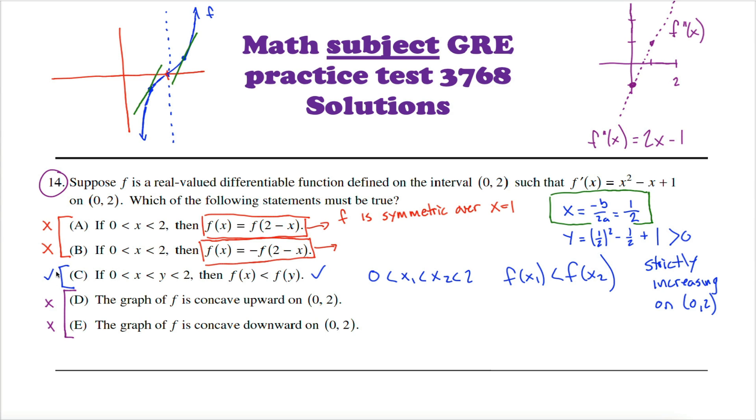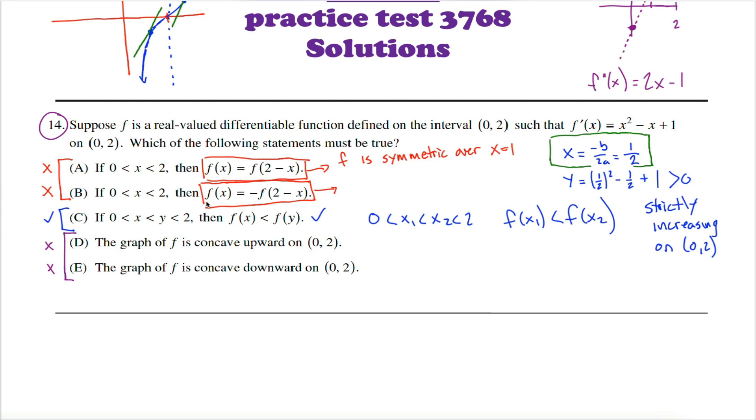To be fair, after we figured out that c was correct, we wouldn't even consider a and b, so under the pressure of a test, that harder analysis that we did up here never even would have had to happen. Now that I think about it, maybe a more straightforward way to eliminate choice b would be to take advantage of this word, must, here.